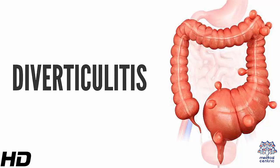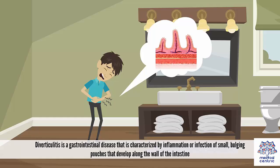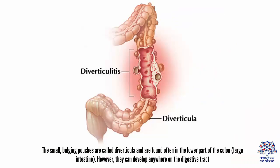Today's topic is diverticulitis. Diverticulitis is a gastrointestinal disease that is characterized by inflammation or infection of small, bulging pouches that develop along the wall of the intestine. The small, bulging pouches are called diverticula and are found often in the lower part of the colon or large intestine. However, they can develop anywhere on the digestive tract.